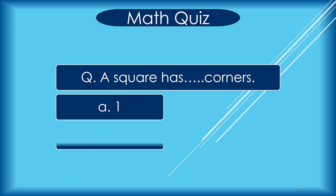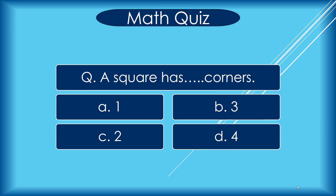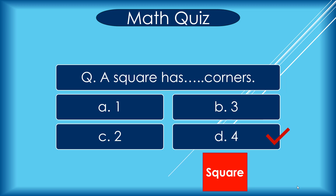A square has how many corners? A 1, B 3, C 2, D 4. Correct answer is D 4: 1, 2, 3, 4.